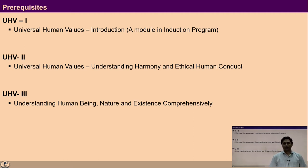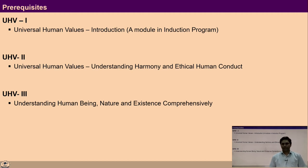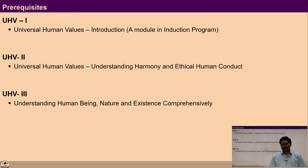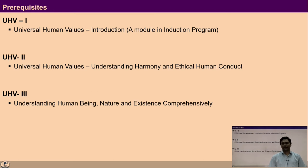UHV-1 is one of the modules done in the induction program where we talk about aspirations and concerns related to a student. UHV-2 basically talks about basic aspirations, that is happiness and prosperity with its continuity, and in UHV-3 the self is discussed in detail with its activities and interconnectedness with nature and existence.